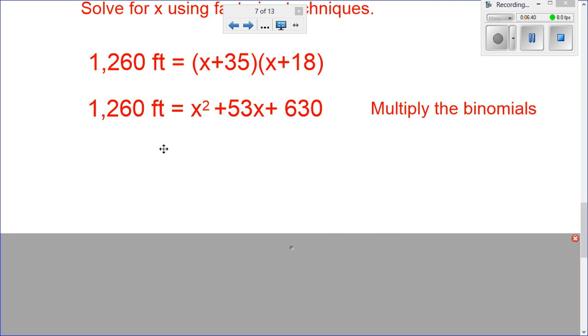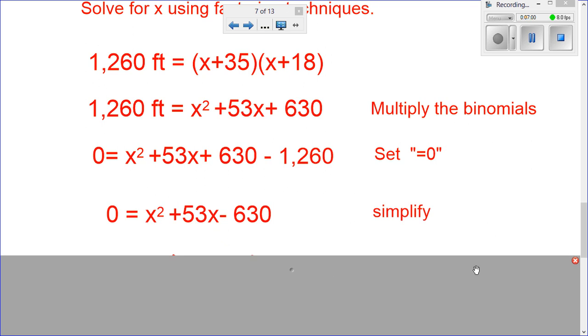The next step is to set it equal to zero. We're going to use the zero product property, so our equation must be set equal to zero. So, if I subtract 1,260 feet from both sides, I end up with the following expression. And simplifying that, I get zero is equal to x squared plus 53x minus 630. So, again, what we're doing is we're setting up to factor using the zero product property. So, now we have this expression equal to zero.